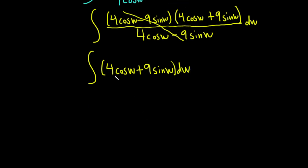So when you're integrating these the constants are in front of the functions so they hang out. So the integral of cosine is going to be sine and that's because the derivative of sine is cosine. So we get 4 sine w.